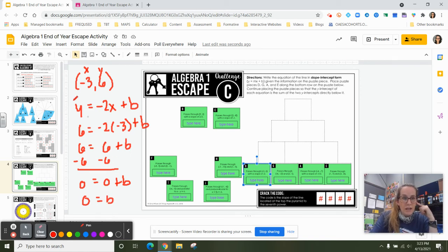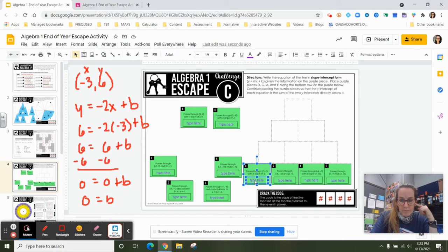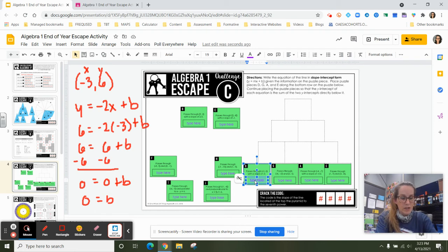So I can come over to my puzzle piece where it says type here. And I'm going to do control all to highlight all the words type here, or you could drag.